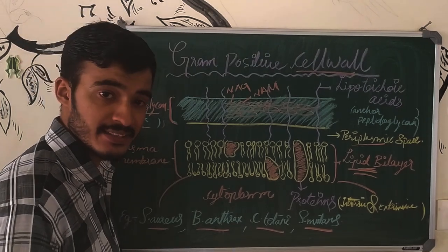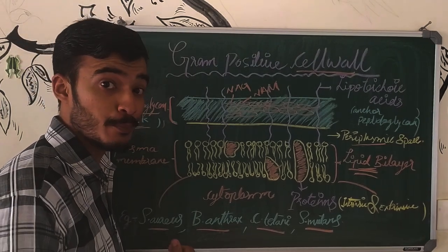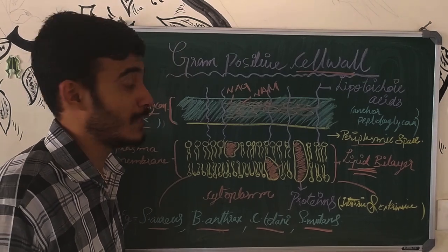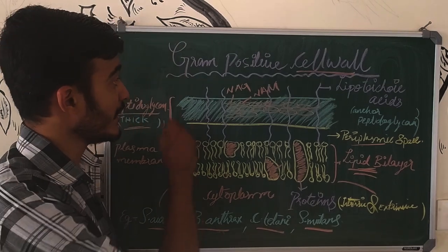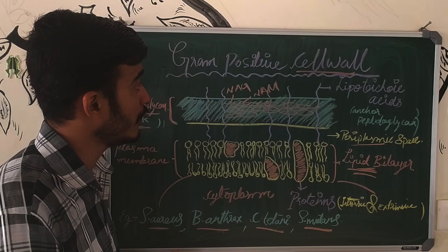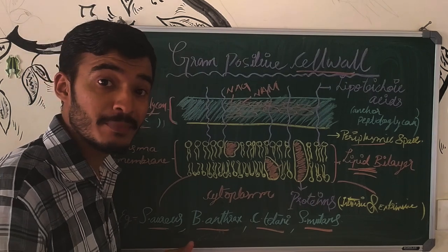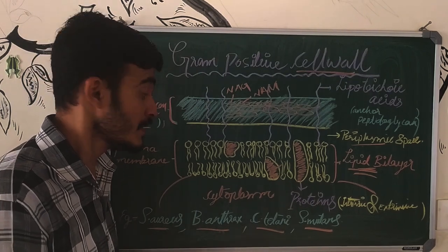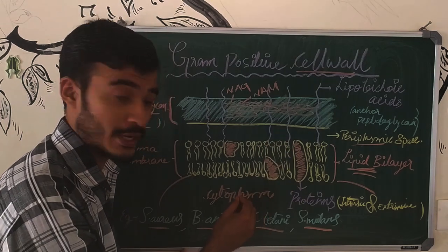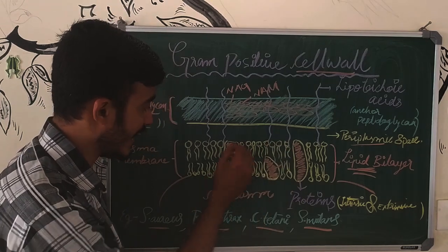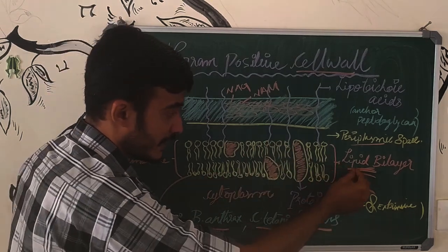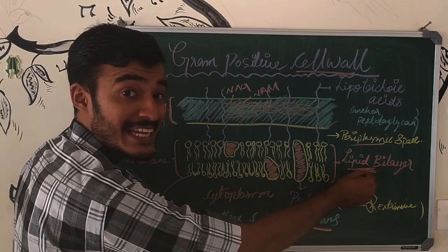In the bacterial cell wall, we call it gram-positive cells and gram-negative cells. We call it the human cells — we call it the plasma membrane, and we call it the lipid bilayer.